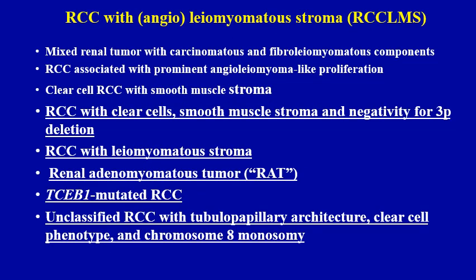One very confusing aspect about this particular entity — which hereafter I will refer to with the abbreviation RCCLMS — is that a variety of terminologies have been utilized in the literature to describe these tumors. Notable examples include: clear cell RCC with smooth muscle stroma; RCC with clear cells, smooth muscle stroma, and negativity for 3p deletion; RCC with leiomyomatous stroma; renal adenomyomatous tumor (also commonly referred to as RAT); TCEB1-mutated renal cell carcinoma; and unclassified renal cell carcinoma with tubulopapillary architecture, clear cell phenotype, and chromosome 8 monosomy.